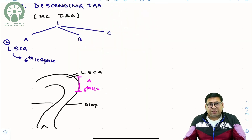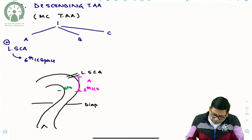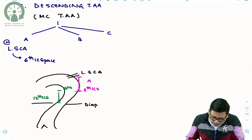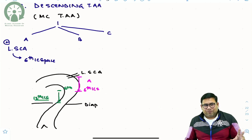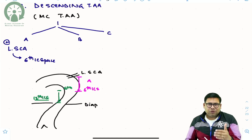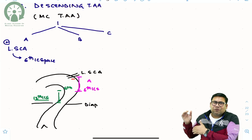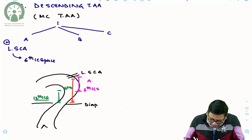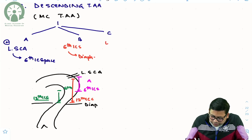Type B is the aneurysm starting at the level of the 6th intercostal space, extending up to the 12th intercostal space. The 12th intercostal space is the space between the diaphragm and the 12th posterior rib — so you can also say up to the diaphragm, or from the 6th to the 12th rib. Type C starts at the level of the left subclavian artery and goes right up to the level of the 12th intercostal space or the diaphragm. Type C is the longest.